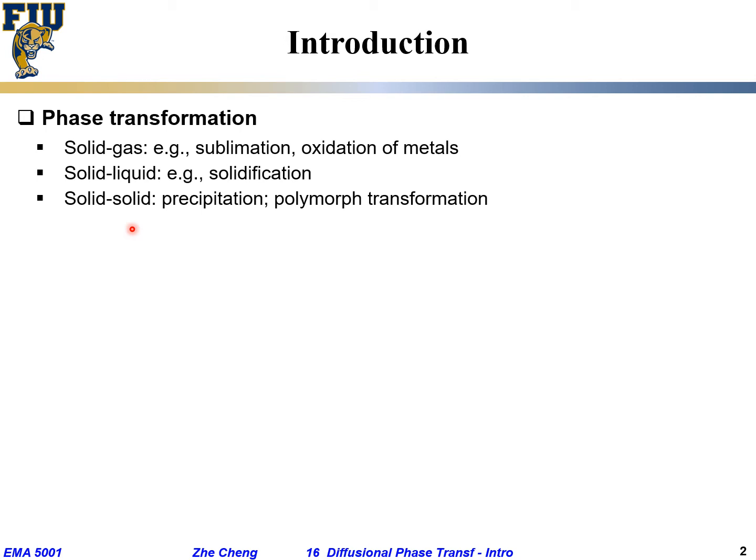Examples of solid-solid transformation include precipitation — the formation of a precipitate due to a change in solubility. You may have heard of precipitation in liquid solutions; for example, an oversaturated sugar solution, when cooled down, causes sugar crystals to precipitate out. A similar phenomenon happens in the solid phase, and this is called precipitation-type phase transformation, which is very important for many metallurgical applications in alloys such as aluminum and titanium.